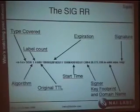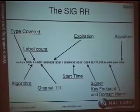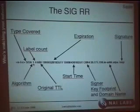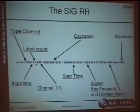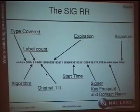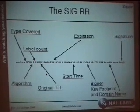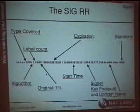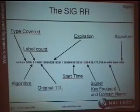The signature record is the most complicated. After the owner, type, and class, you have a type-covered field — for example, showing a signature covering SOA records. There's an algorithm field matching the key used, a label count indicating wildcard or exact match, and the original TTL. When data is passed around, the TTL is decremented. For verification purposes, I have to reset the TTL back to the original, verify the signature, then restore the decremented TTL.